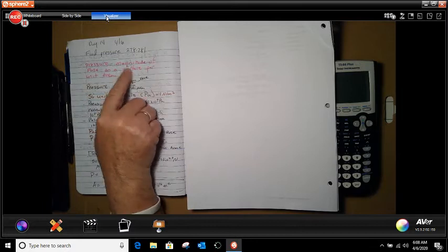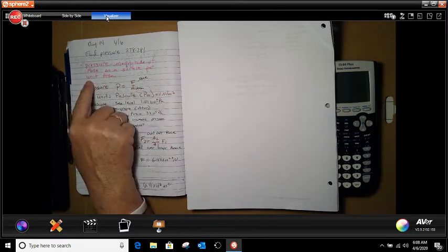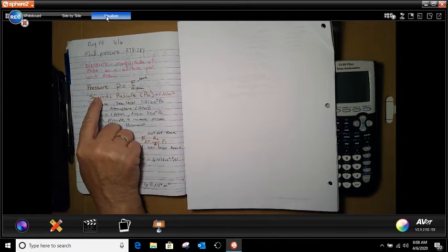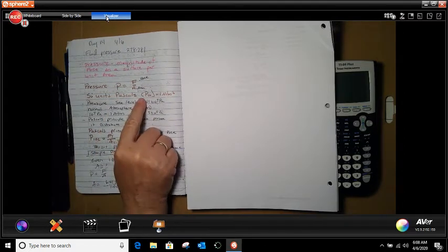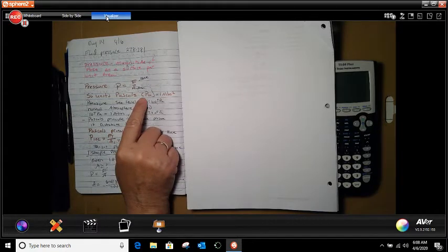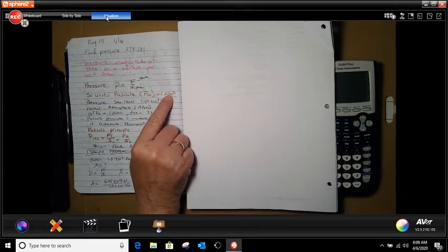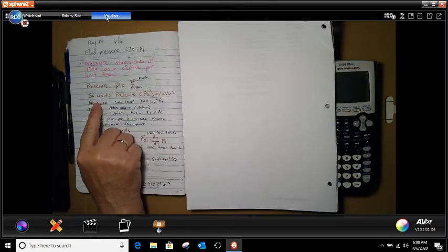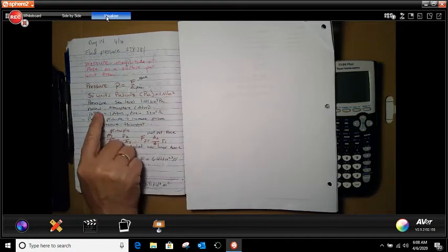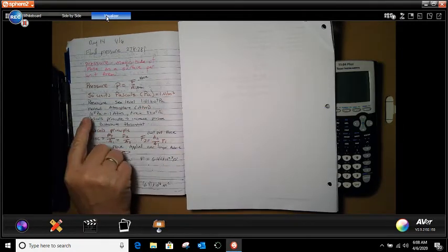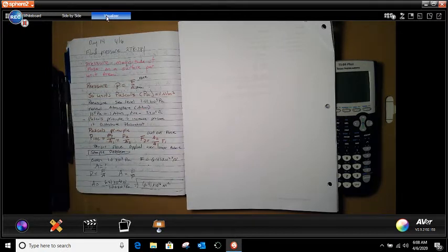It says pressure is the magnitude of force on a surface per unit area. So pressure, P, equals force divided by area. SI units for pressure is pascals equals one newton per meter squared. Pressure at sea level is at 1.01 times 10 to the fifth pascal. Normal pressure is 1 atm. 10.5 pascals equals 1 atm, which a tire has 3.50 atm.